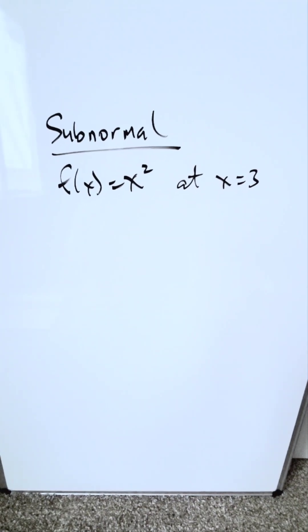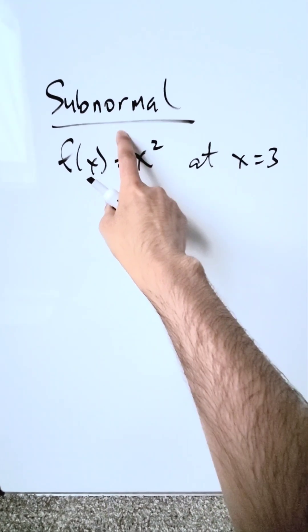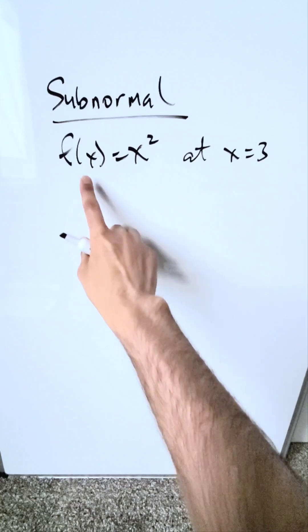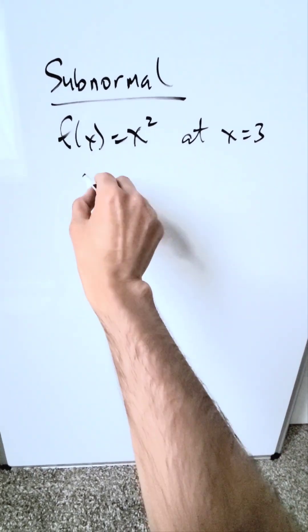We are looking at a certain calculation related to the subnormal. What is that? We'll talk about it momentarily. Function x squared at x equals 3. Let's graph it out.